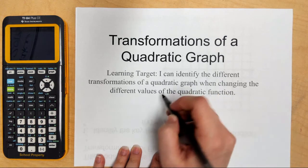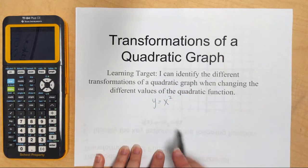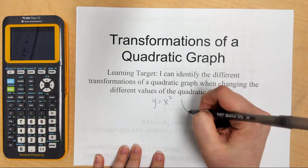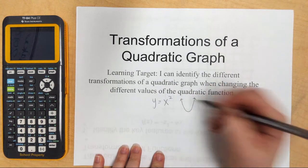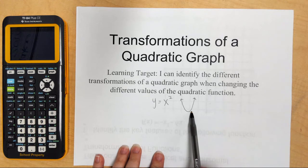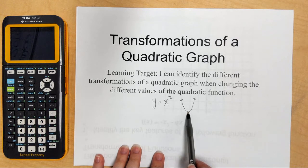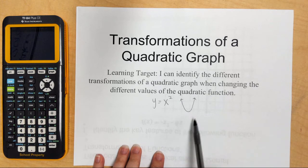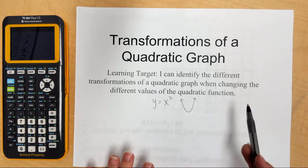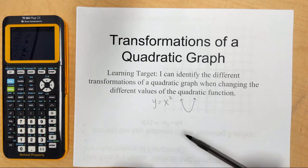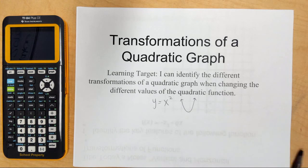Remember, a quadratic function is the function that has the x squared, and the graph looks like this. The whole point of this lesson is how we move this graph, because sometimes it ends up in different places. Sometimes it's wider, sometimes it's narrower, sometimes it's flipped, sometimes it's facing upwards. So the whole thing we're trying to figure out is how it moves and what makes it move.